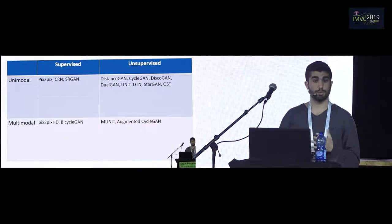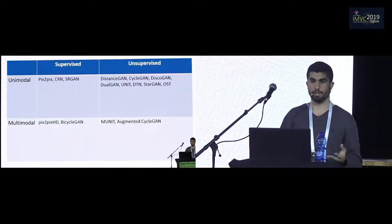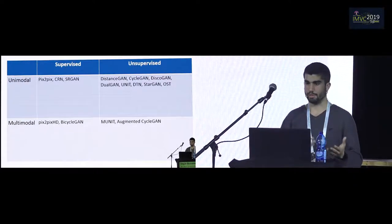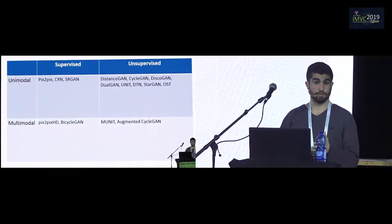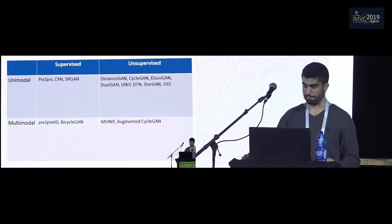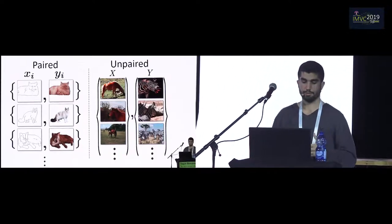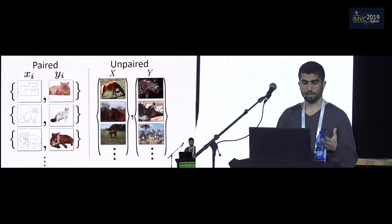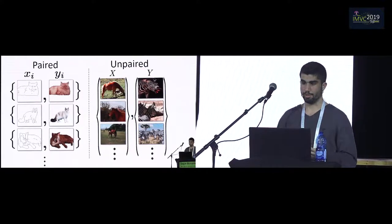Another distinction is between unimodal and multimodal approaches. Given an edge, there are multiple types of shoes we can produce — different in color, different in texture — and we would like to capture the idea of getting a variety of different outputs when translating. In the supervised approach, we are given an edge and a matching image; in the unsupervised approach, we are simply given a collection of horses, a collection of zebras, and asked to do the translation.